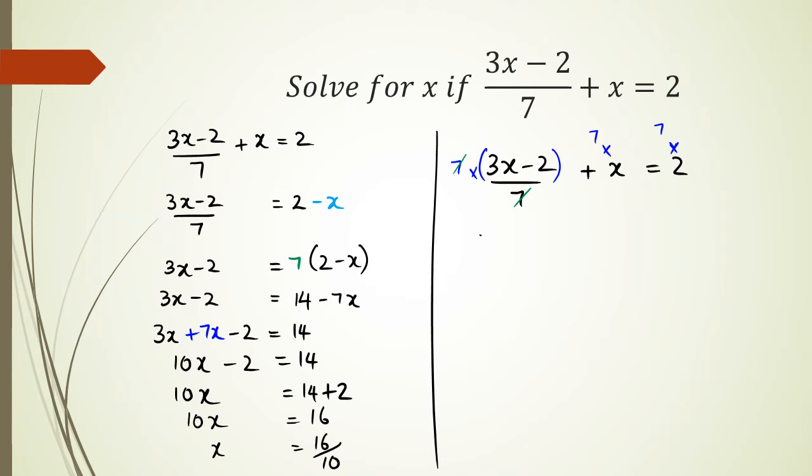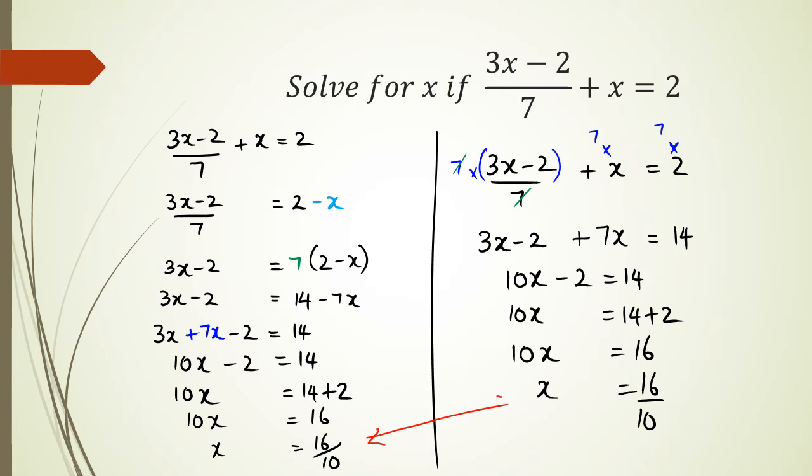You're left with 3x - 2 + 7x = 14. Now you have a nice linear equation to work with. Combining 3x and 7x, that's 10x - 2 = 14, then 10x = 16, and x = 16/10. As you can see, both ways give the same answer.